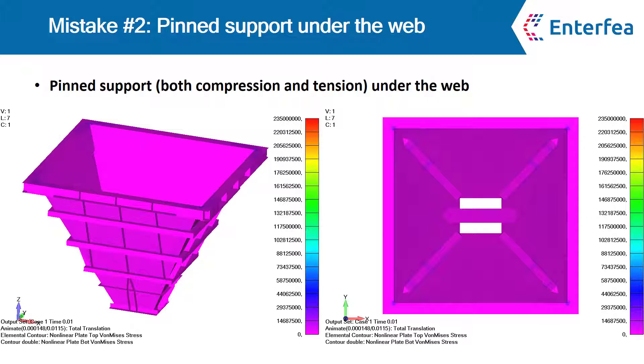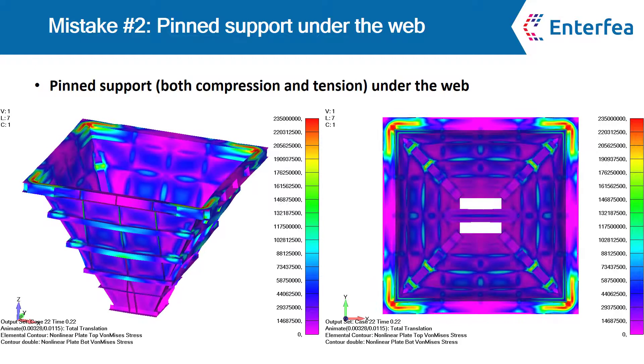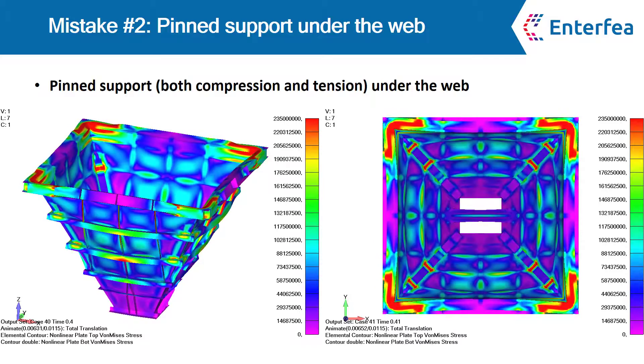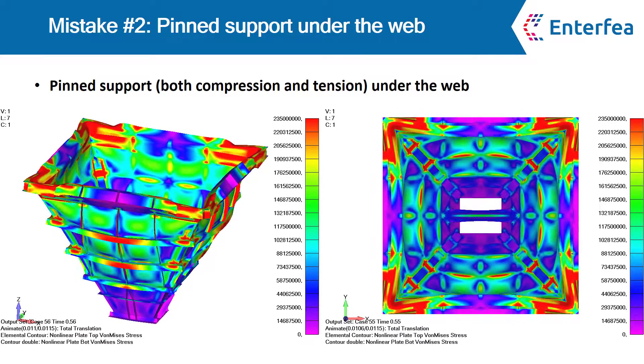The second mistake can be just as popular as the first one. Let's assume that we will make a linear support under the web of the supporting beam. I mean in a lot of different structural problems, this is a typical solution that you support the beam under the web. This is where the load is, right?